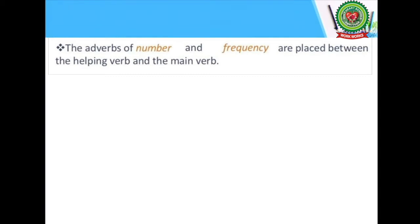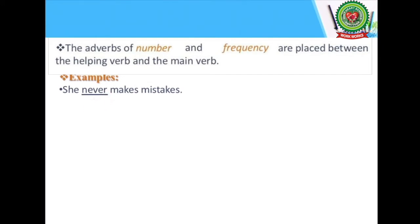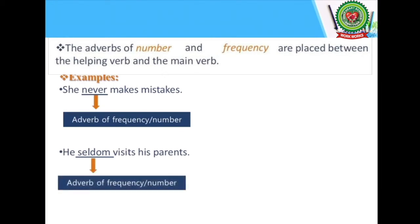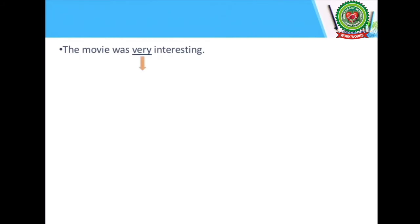Adverbs of number and frequency are placed between the helping verb and the main verb. Example: 'She never makes mistakes' — 'never' is an adverb of frequency, placed between the subject and the verb. 'He seldom visits his parents' — 'seldom' is again an adverb of frequency. For adverbs of degree: 'The movie was very interesting' — 'very' is an adverb of degree, placed before the word it qualifies.